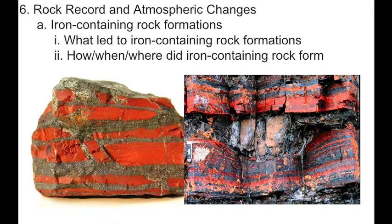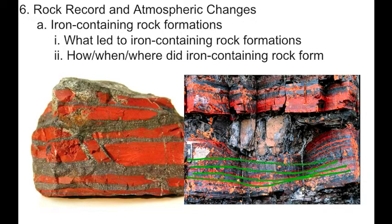The first thing you probably notice about these rocks is that they look like they are sedimentary rocks, such that a long time ago, sediments must have laid down horizontally and compacted over time to form a sedimentary rock. And that is correct — rocks that contain iron are, in fact, sedimentary rocks.